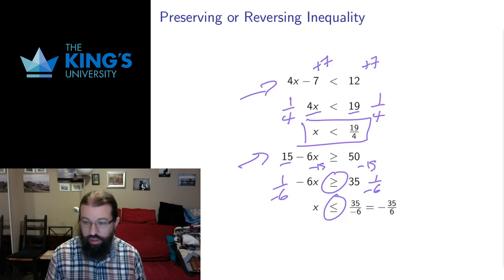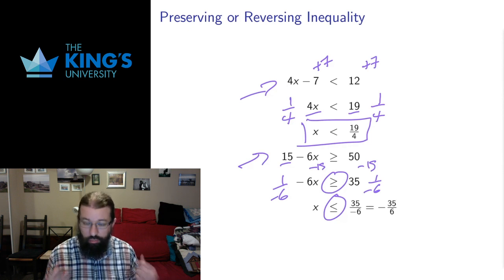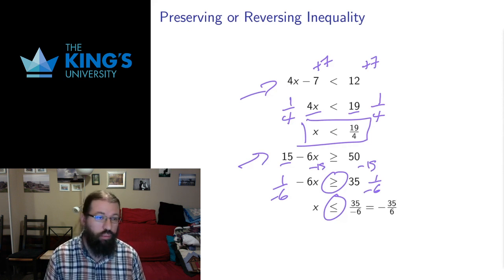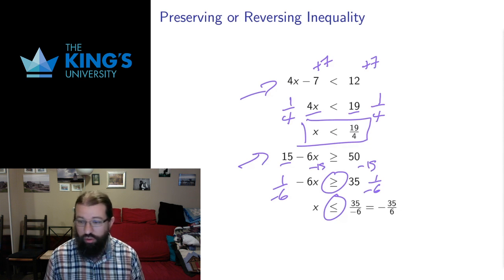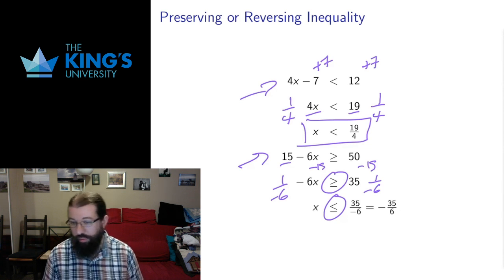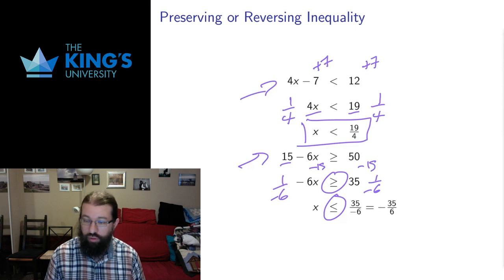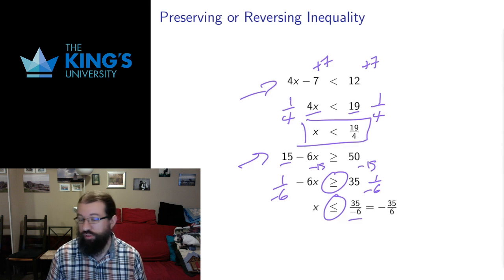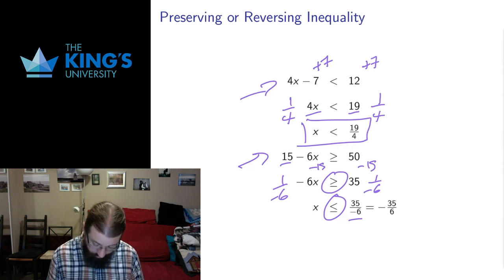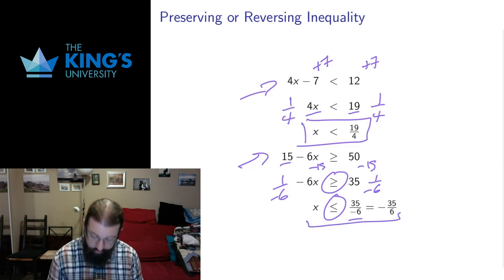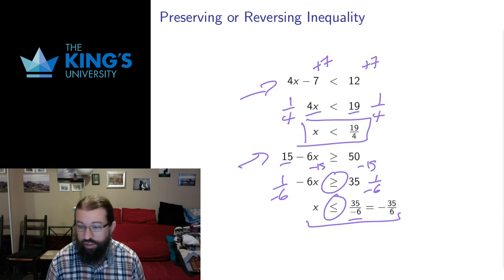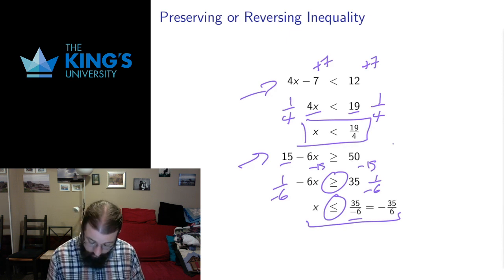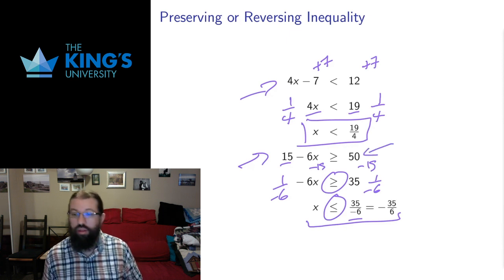This greater than now becomes a less than — any time I multiply or divide by a negative number, I switch the direction of my inequality. The negative 6 cancels on the left. I get negative 35 over 6. A negative in the numerator or denominator is just the same as the negative of the fraction, so all numbers less than or equal to negative 35/6 satisfy the original inequality.